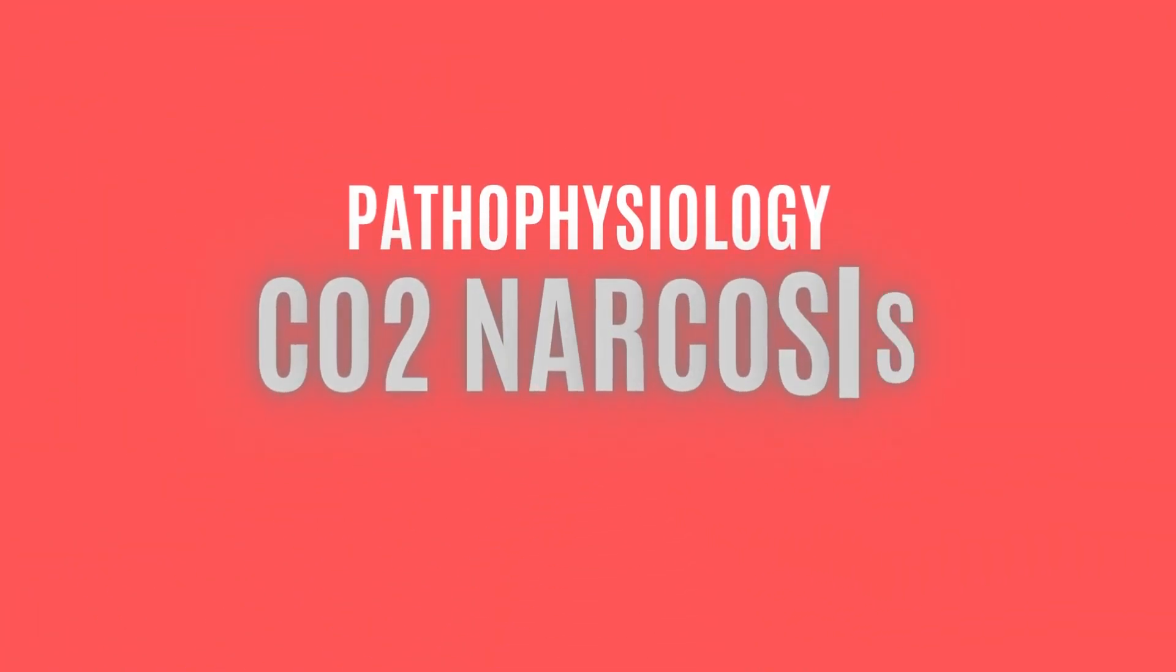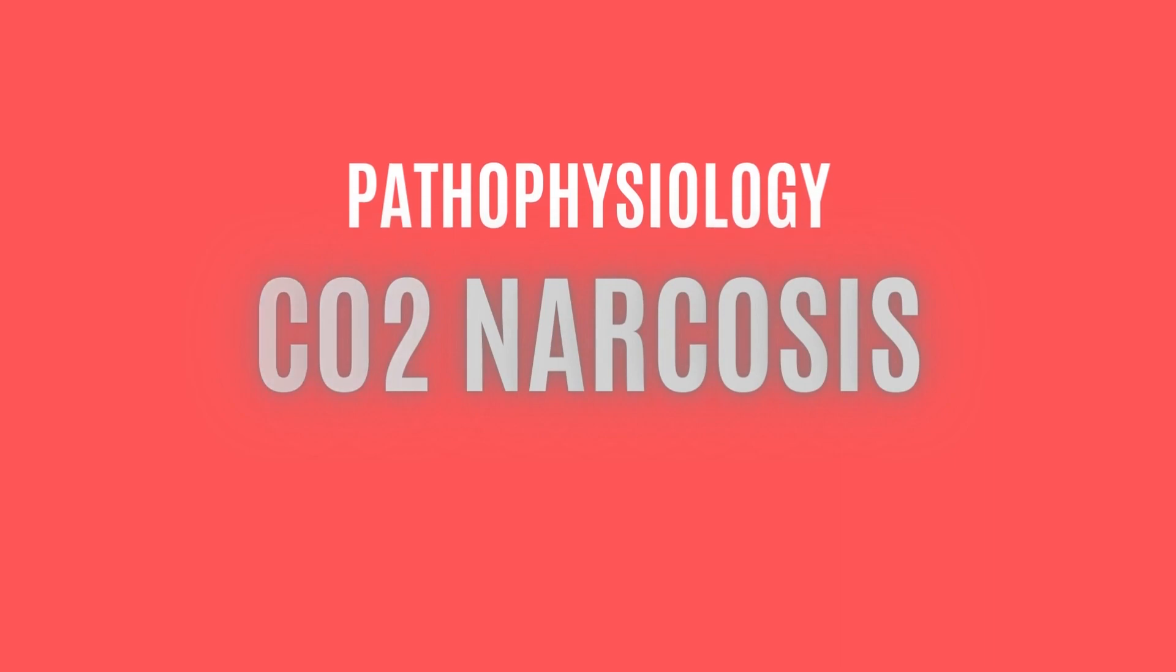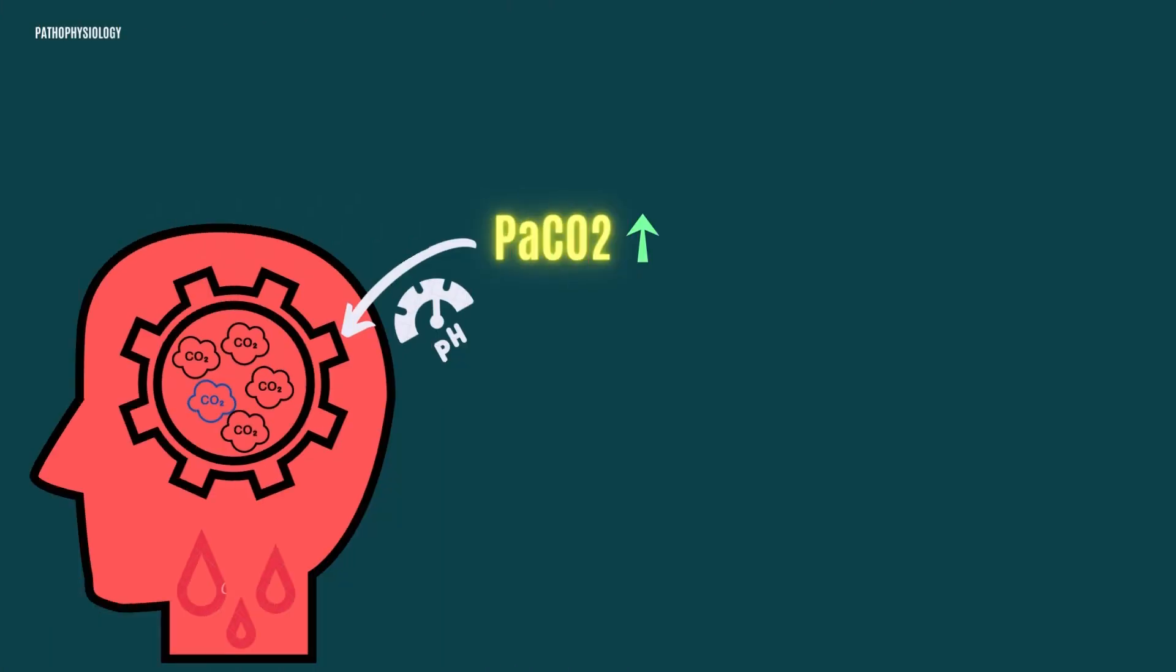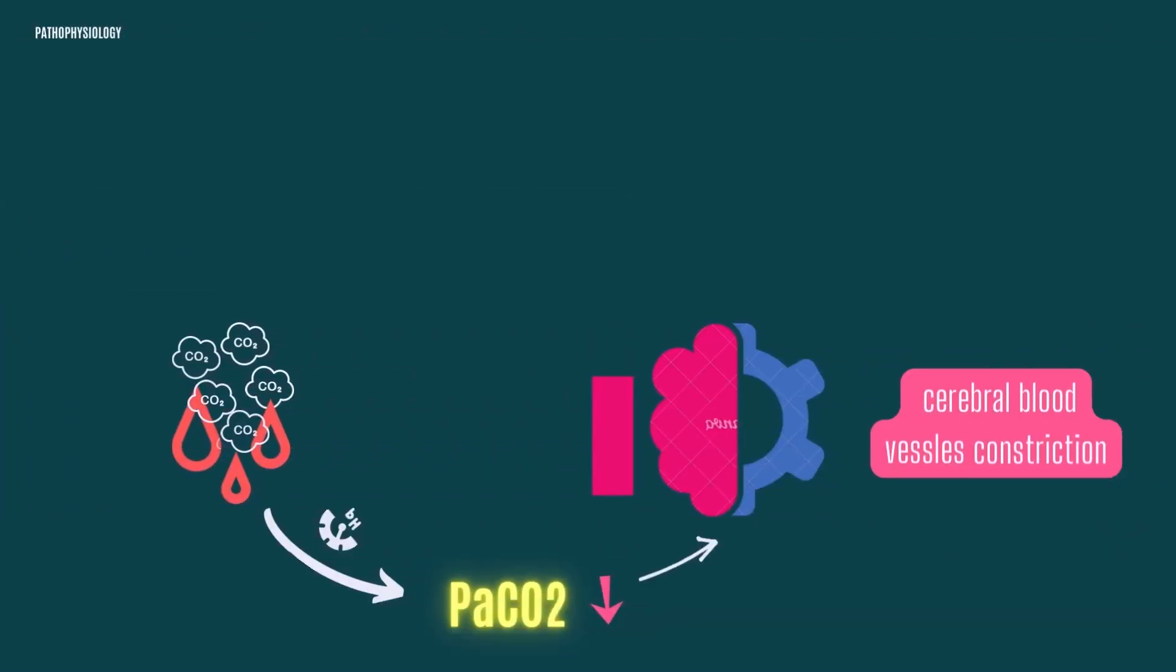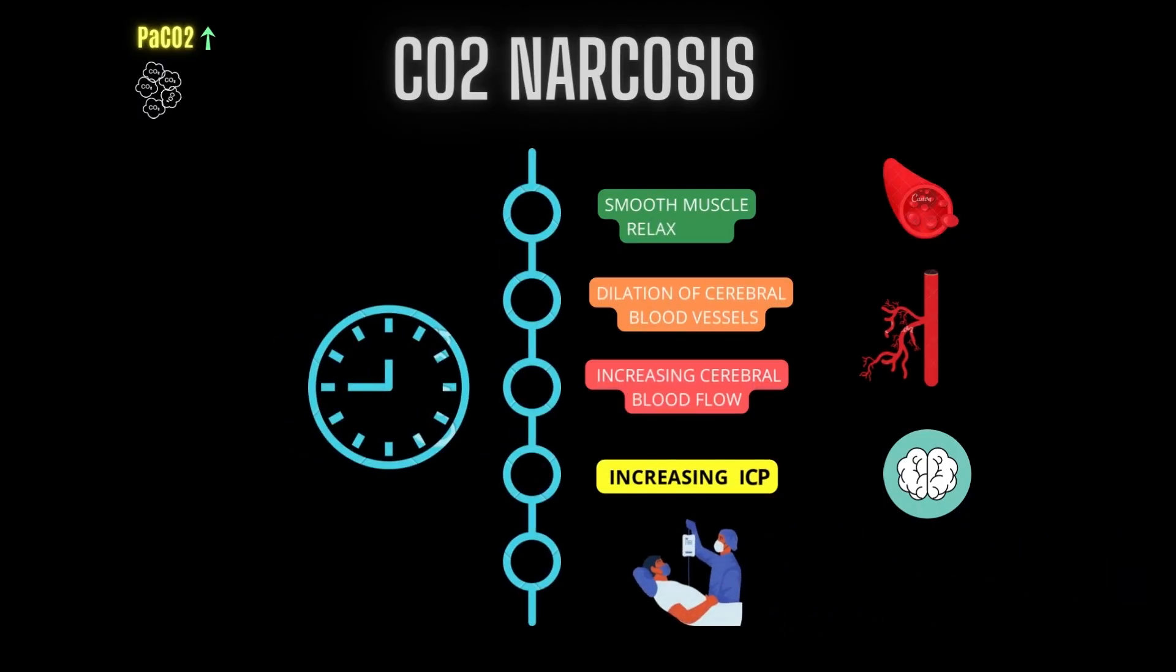Now, we know what causes CO2 narcosis, it's time to understand its pathophysiology. Carbon dioxide is fundamental for blood circulation in the brain. Changes in PaCO2 in blood are thought to cause changes in the pH of the cerebral spinal fluid. Changes in the pH of the cerebral spinal fluid cause smooth muscles to relax or constrict. When PaCO2 levels rise, cerebral blood vessels dilate. When they fall, cerebral blood vessels constrict. So, smooth muscle relaxation in patients with CO2 narcosis causes dilation of cerebral blood vessels which increase cerebral blood flow and potentially increasing intracranial pressure. Which results in a depressed level of consciousness.